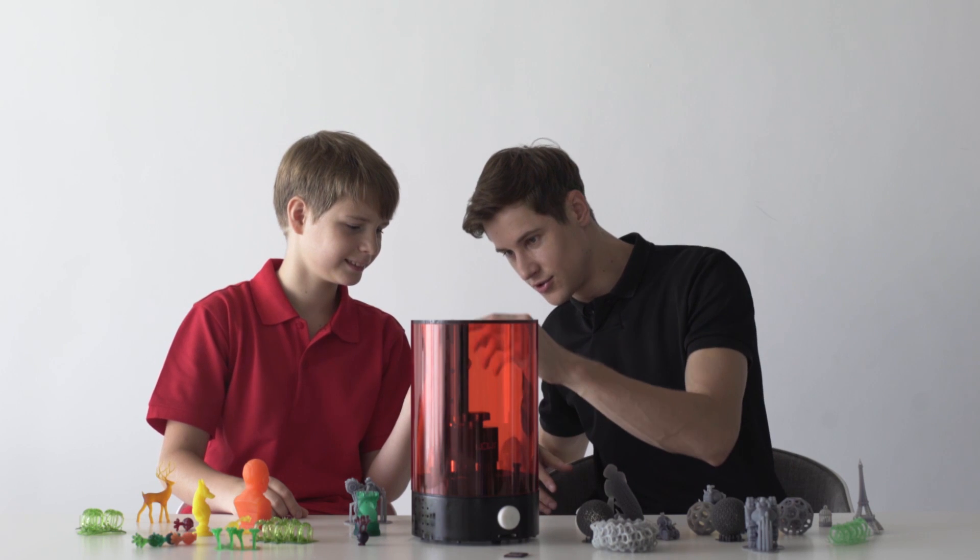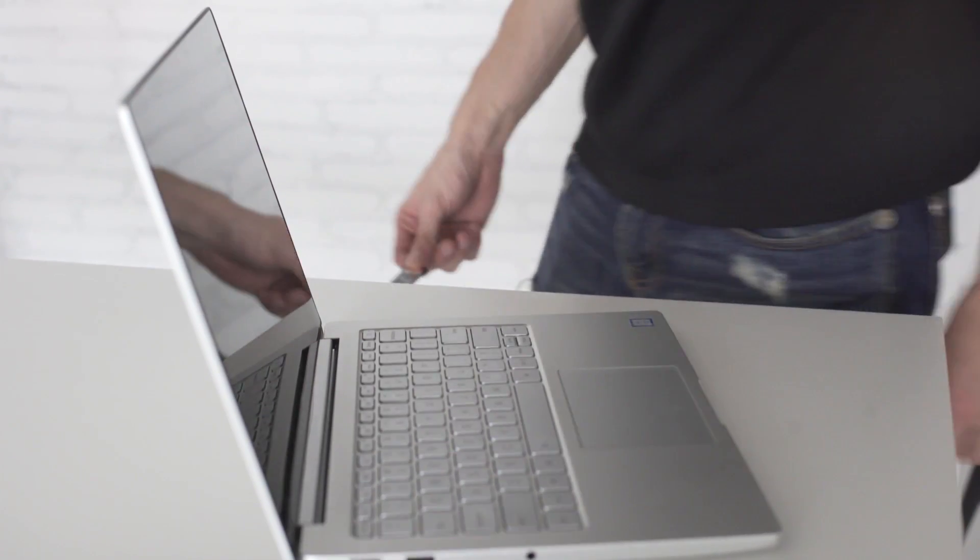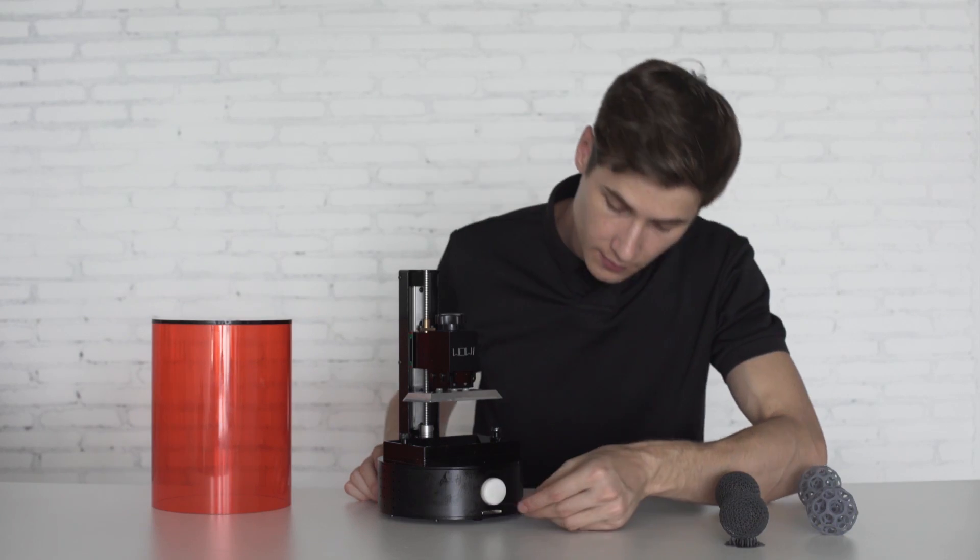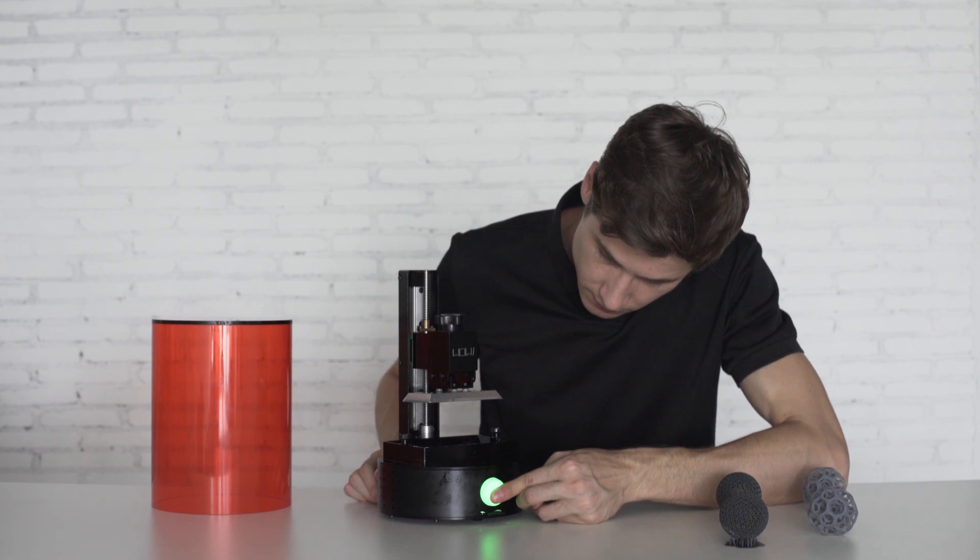SparkMaker is designed as a plug-and-play standalone printer. Starting to print is super easy. Just download the design file from computer to an SD card, insert it to SparkMaker with resin filled, press the button and you are all set.